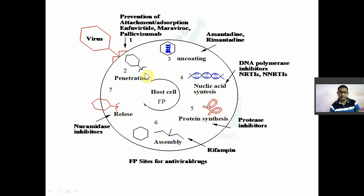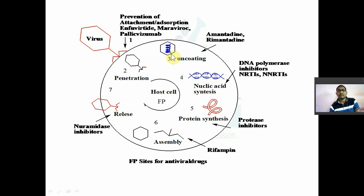After penetration into the cell, the parts of the virus get separated — the capsid part and the tail part. The capsid part contains the genetic material of the virus, which may be either DNA or RNA. The capsid is separated and the genetic material is released. This release of genetic material from the capsid is known as uncoating. So the sequence is: attachment, penetration, and then uncoating.